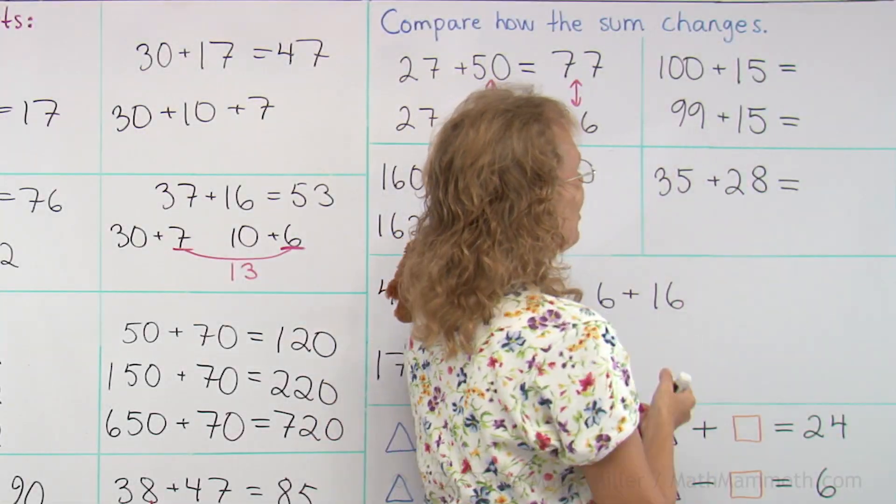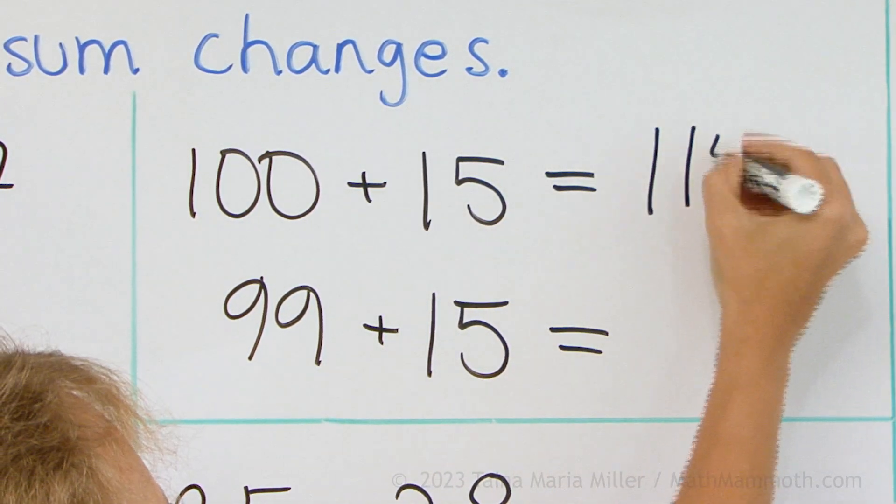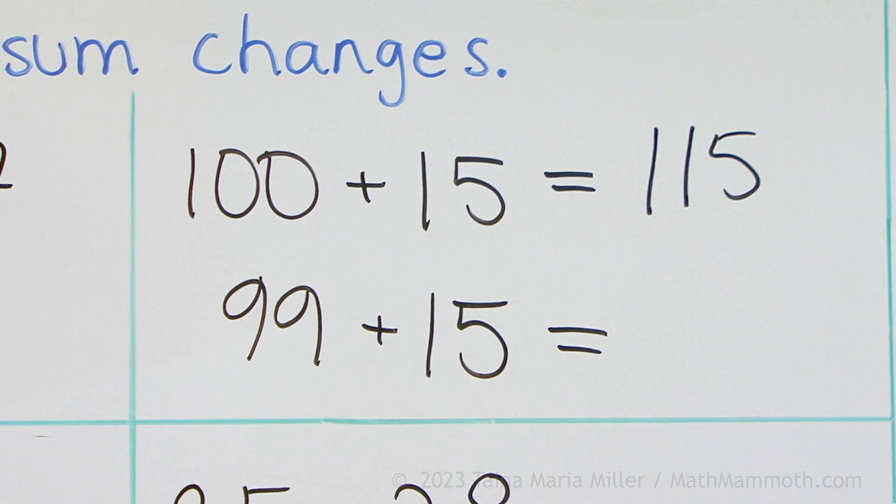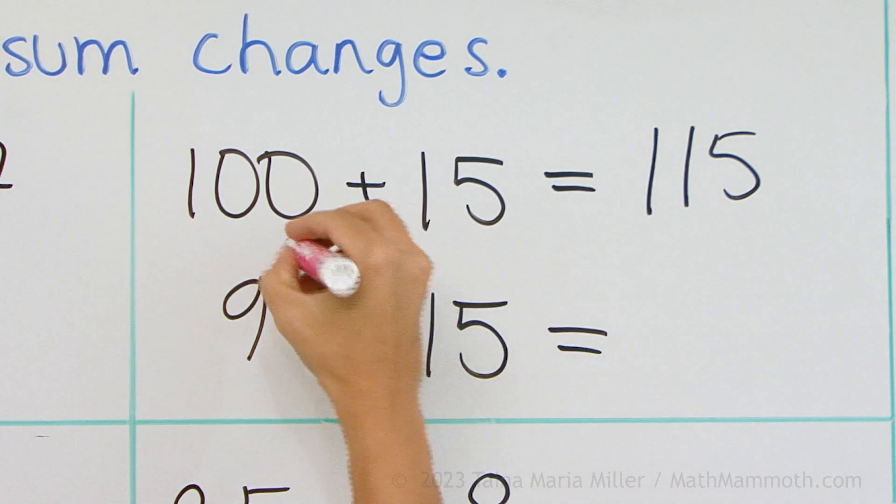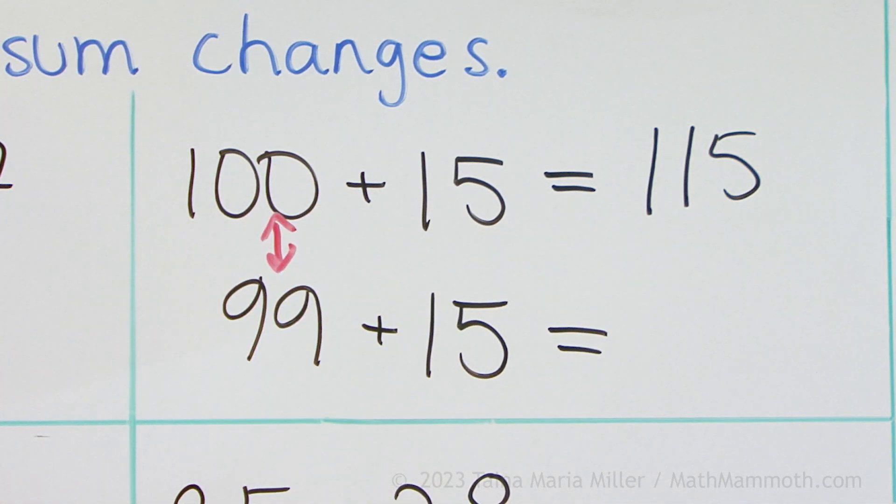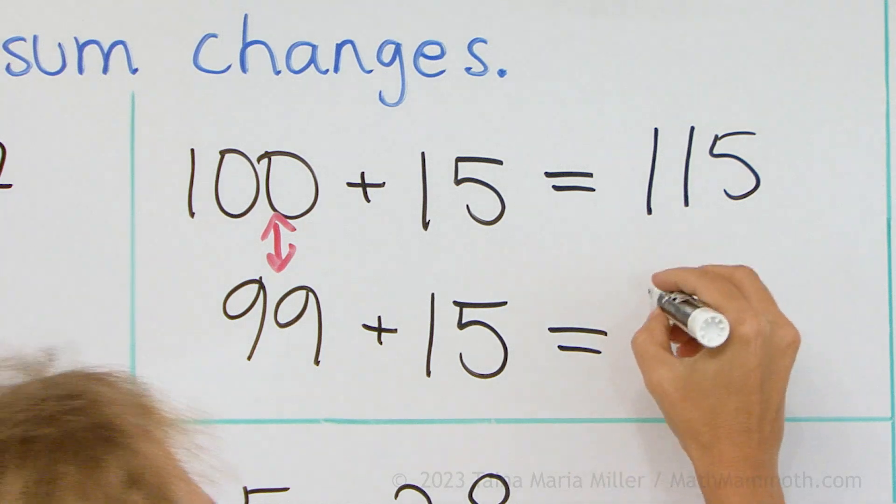Now here 100 plus 15, well that's easy, 115. How about this one, 99 plus 15. Again compare how the sum will change when one of the numbers has changed. Again it's going to be one less, right? So 114.